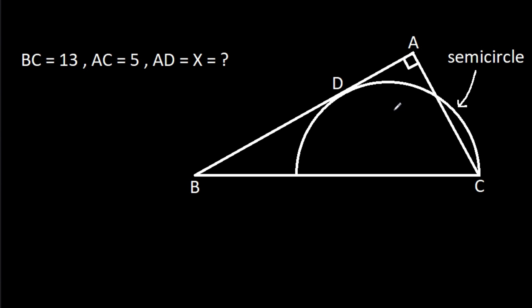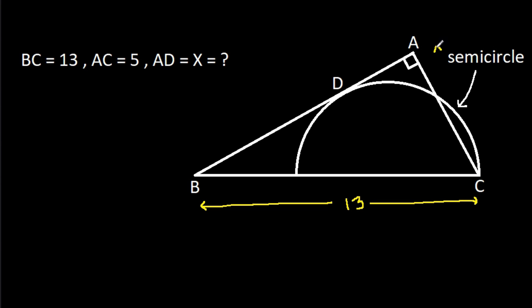In this video, we have been given a semicircle inside a triangle and angle BAC is 90 degrees. BC is 13, AC is 5, and AD is X. We have to find X.